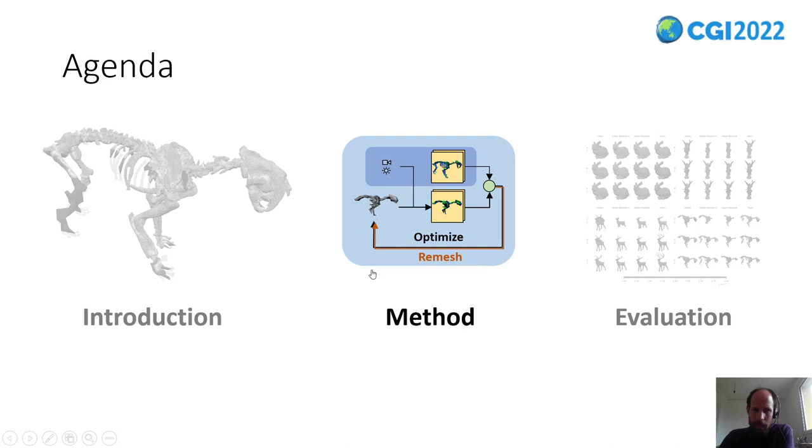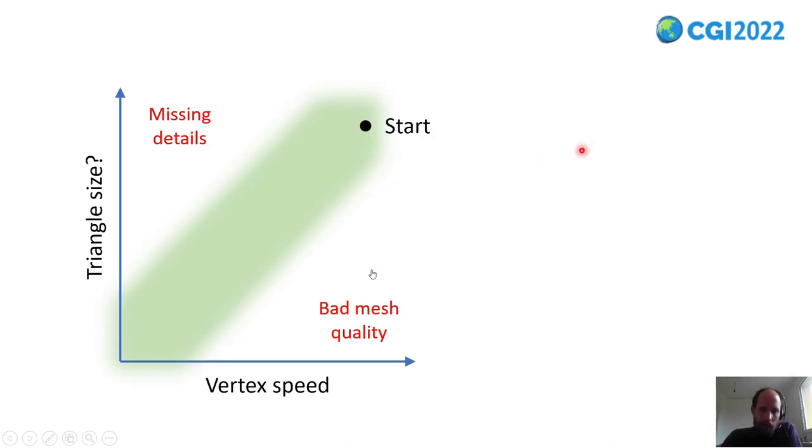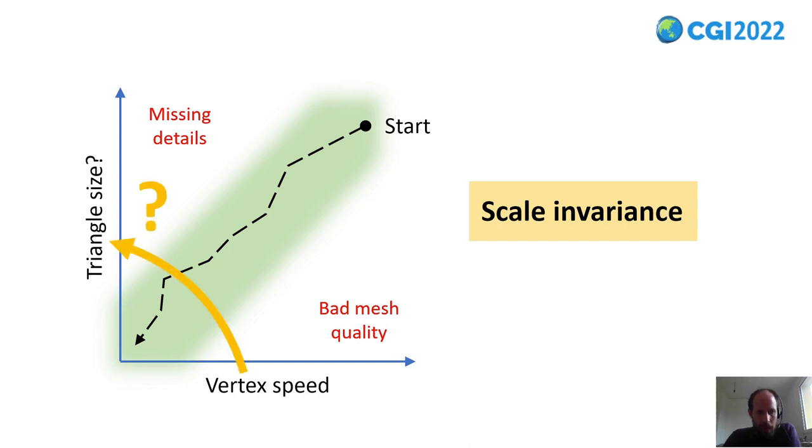So how does that work? You remember the first key feature was adaptive triangle size. So how do we get this triangle size? We start the optimization with large triangles and large vertex speed. And as the Adam optimizer decreases the vertex speed we should somehow also decrease the triangle size. This linear behavior is a direct consequence of the scaling variance that we want to achieve.